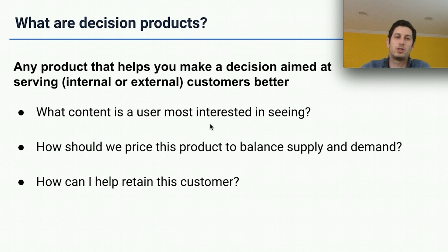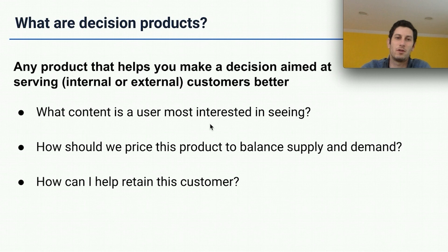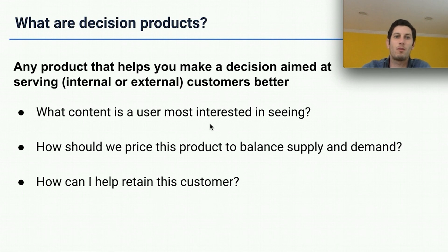What are decision products? Put simply, it's any product that helps you make a decision and is serving an internal or external customer better. For example, what content is a user most interested in seeing? Or how should we price this product to balance supply and demand? Or how can I help retain this customer? These are applications of machine learning at the user level.